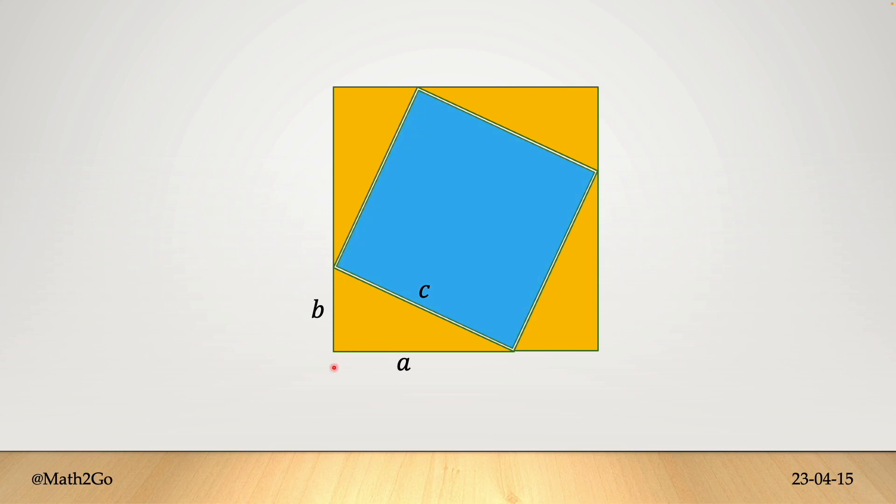Now you notice two things. Firstly, the side length of this outer square is a + b, because for this part we have length a and for this part we have b. On the other hand, the side length of this inner square is c because this is our hypotenuse. This also implies immediately that the area of this inner square is c².